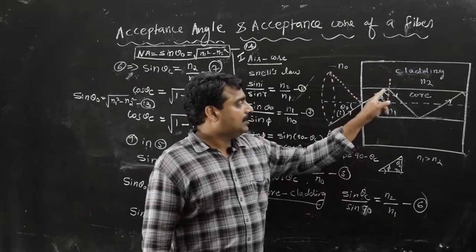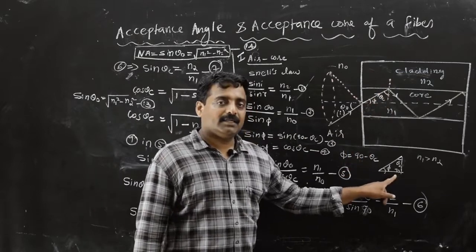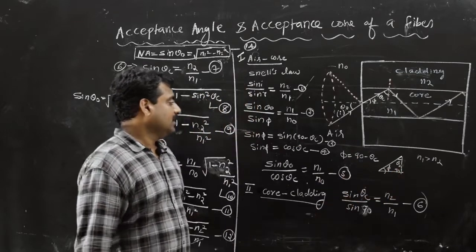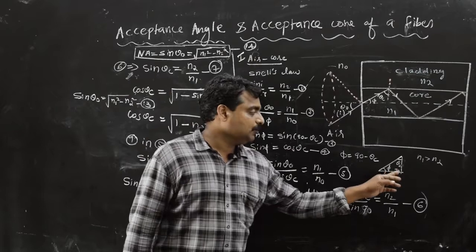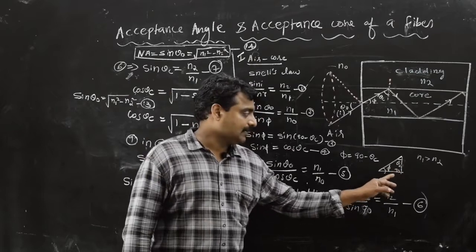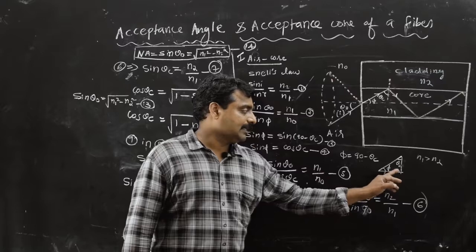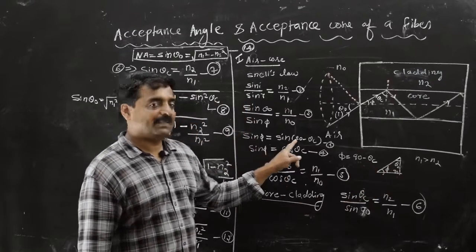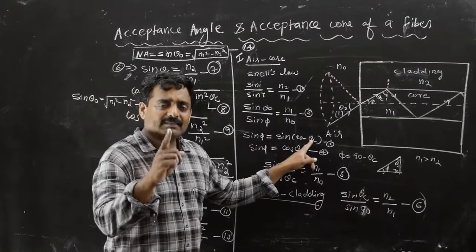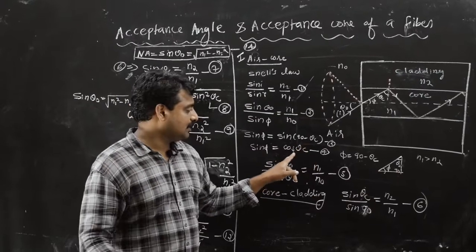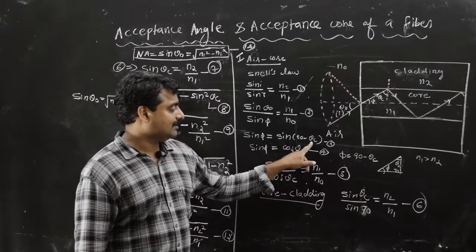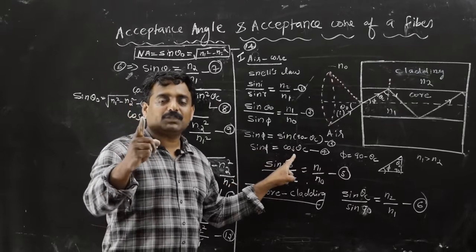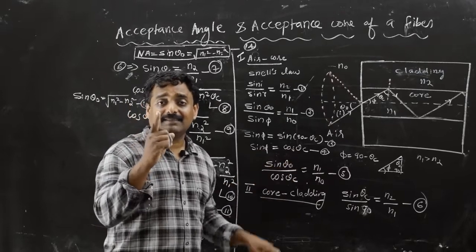This portion shows phi, theta c, and 90 degrees. We have three angles summing to 180 degrees, with one angle being 90. The remaining angle is 90 minus theta c, so sin phi equals sin(90 minus theta c), which equals cos theta c.